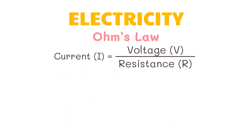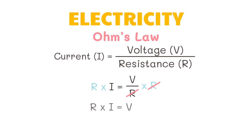This formula is only applicable if we are looking for the current, but what if we are asked to look for the voltage? We use this base formula and transform it so we can look for the voltage. To look for voltage, multiply both sides by resistance to balance the equation. Now, we can cancel out the resistance on the right side, which leaves us with voltage. Now, we have resistance times current equals voltage, or voltage equals current times resistance.